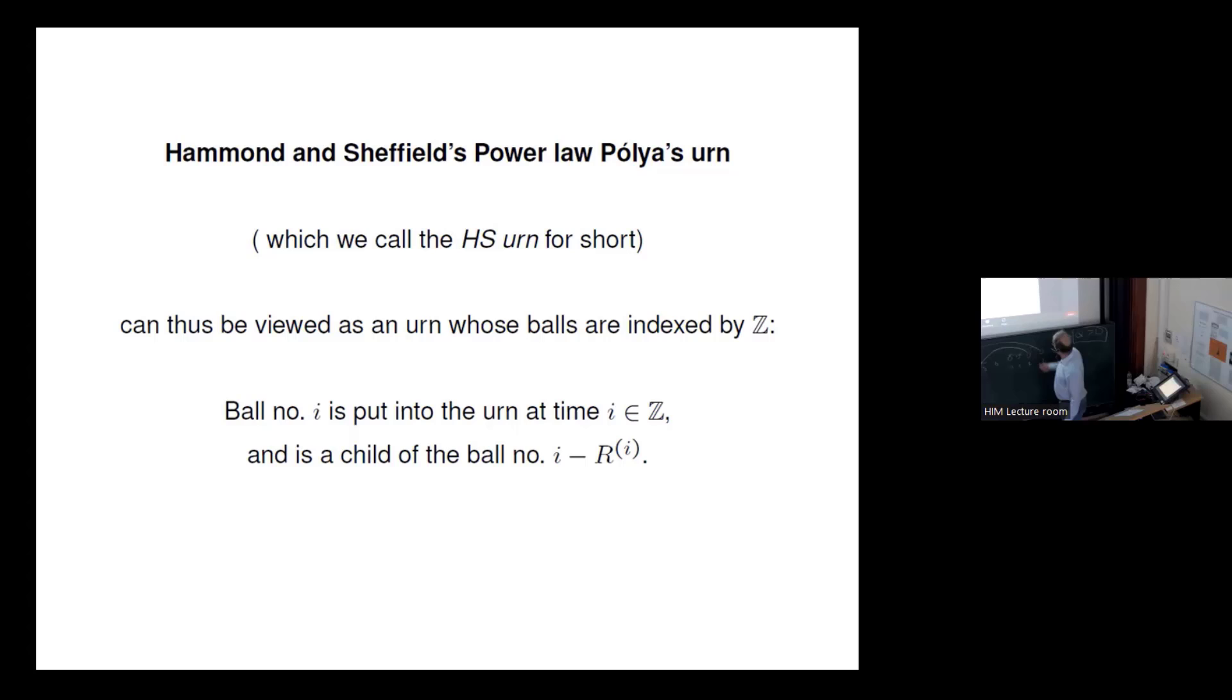Namely, we have in each integer i a random variable R_i which says that i minus R_i is the parent of this ball or individual if you like. So for those of you who like this particularly, this is a Z-indexed web.